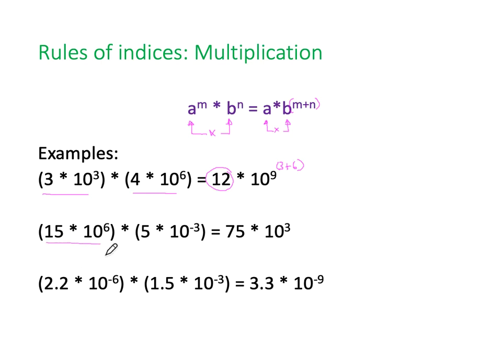Our next example. 15 times 10 to the 6 multiplied by 5 times 10 to the minus 3. 15 times 5 is 75. And if we take our 6 and we add to that minus 3, we end up with 6 minus 3 giving us 3. So 75 times 10 to the 3. And our third example. 2.2 times 10 to the minus 6 multiplied by 1.5 times 10 to the minus 3. 2.2 times 1.5 is 3.3. And we're going to end up with a minus 6 plus a minus 3 giving us a total of minus 9.